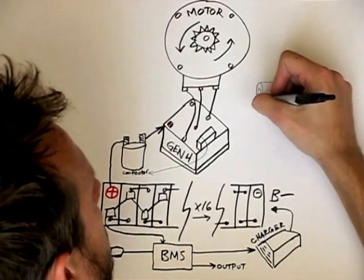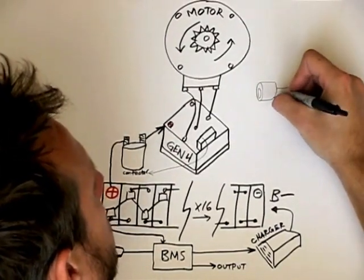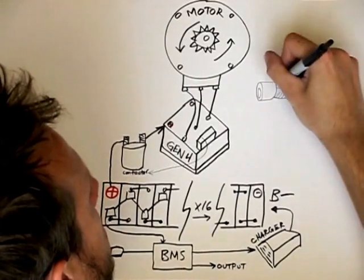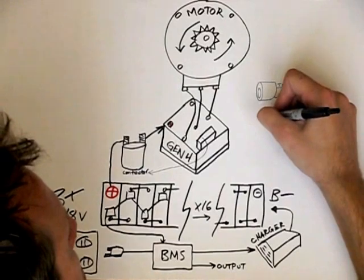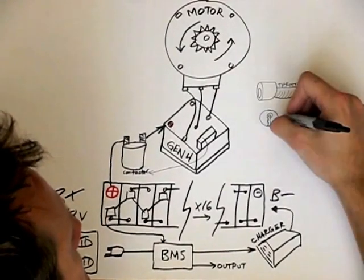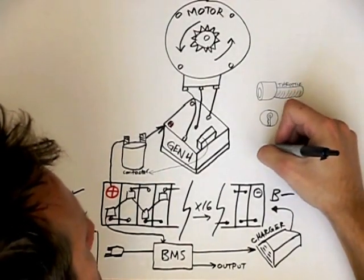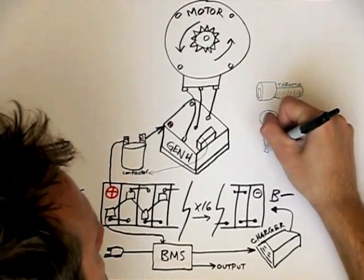Also on the controller is a multi-pin connector that serves several purposes. It powers the contactor when the time is right. It is also where the throttle input goes. I'm using a Magura twist throttle. This is a 0 to 5000 ohm potentiometer that the controller will translate into go power.